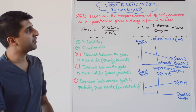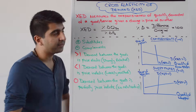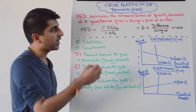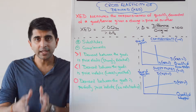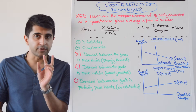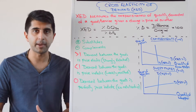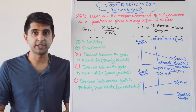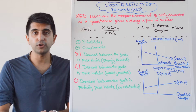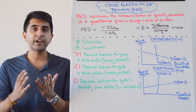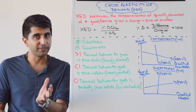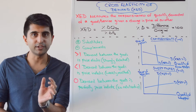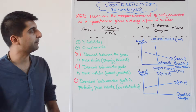Cross elasticity of demand measures the responsiveness of quantity demanded of one good or service given a change in price of another. Looking at XED gives us two key pieces of information. First, we can work out whether the goods are related to each other, i.e. whether they are substitute goods or complementary goods. But we can also work out with the figure just how closely related they are — strongly or weakly.